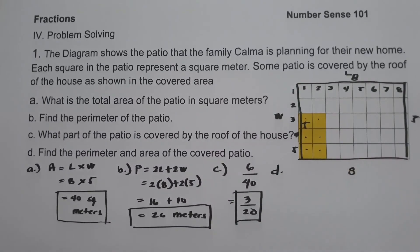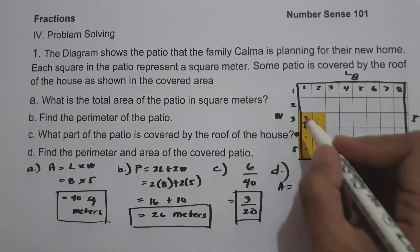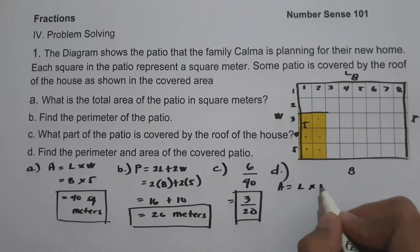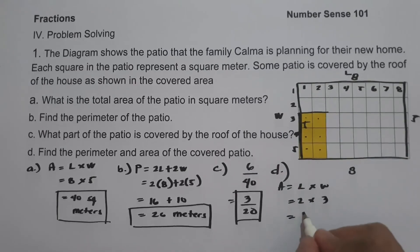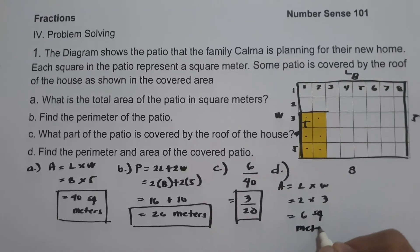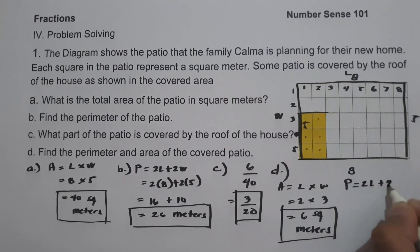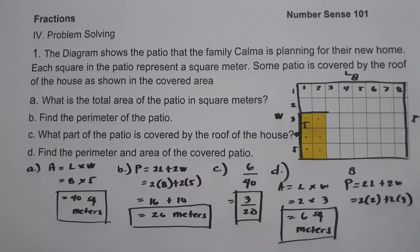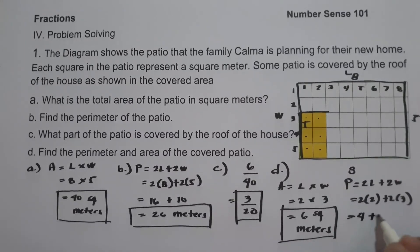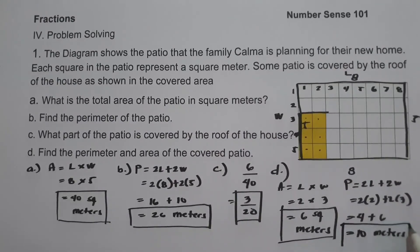On letter D, find the perimeter and area of the covered patio. The length is 2 and the width is 3, so the area is 2 multiplied by 3, which is 6 square meters. For the perimeter, using 2 times length plus 2 times width: 2 times 2 is 4, and 2 times 3 is 6. So 4 plus 6 is 10 meters — this is the perimeter.